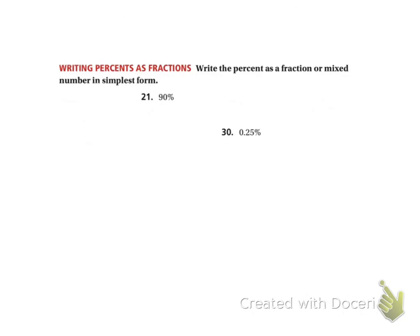We want to write the percent as a fraction or mixed number. So we have 90% for question 21. Remember when we talked about what percent meant, that meant per 100. So this means that we have 90 for every 100. Whatever your percent is, just put it over 100.